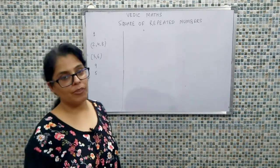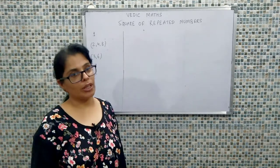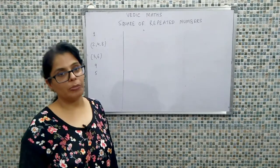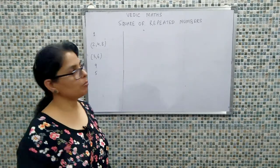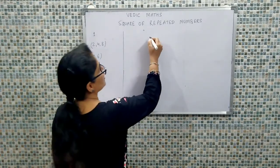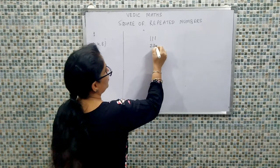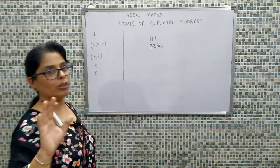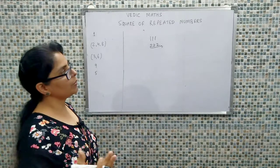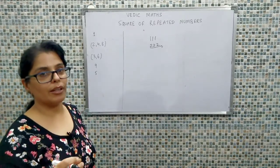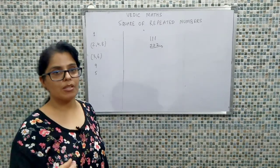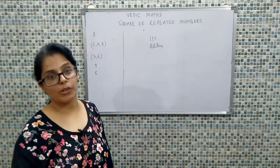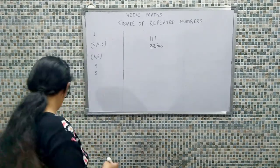Hello viewers, today we will be talking about calculating the square of repeated numbers. Now what do we mean by repeated numbers? Repeated numbers means we have a series of 1s, series of 2s. We are not considering how many times they repeat here — that will depend on the pattern we identify, and based on that pattern it will be easy to calculate their squares.